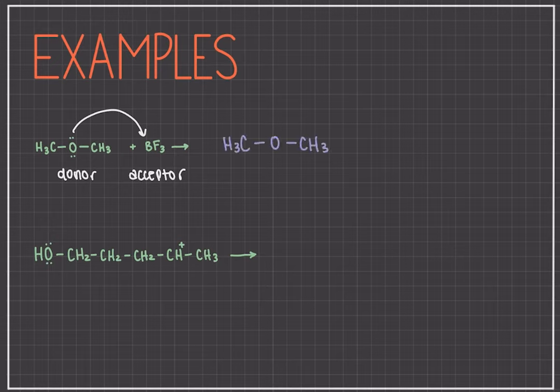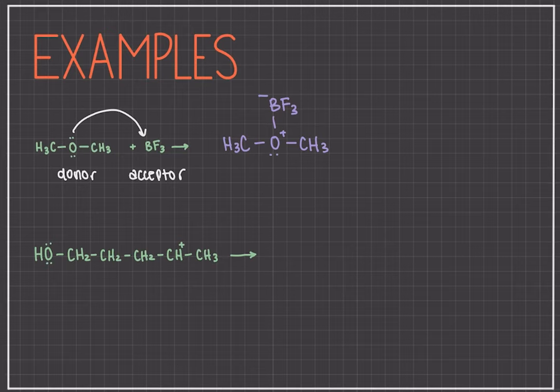As we stated in our rules, the net charge on both sides has to be equal. In our reactants, we see that there's a zero net charge. In our products, we have a plus charge on the oxygen and a negative charge on the boron. The positive and negative make a net charge of zero, so there's a net zero charge on both sides.